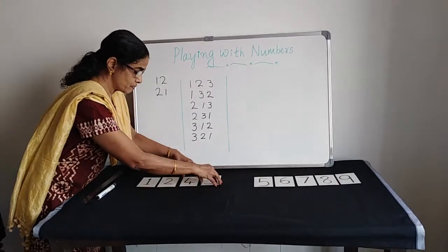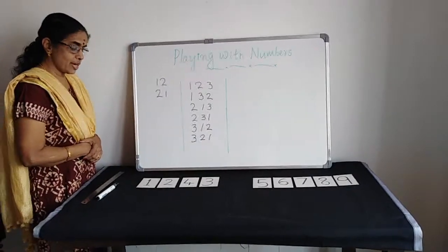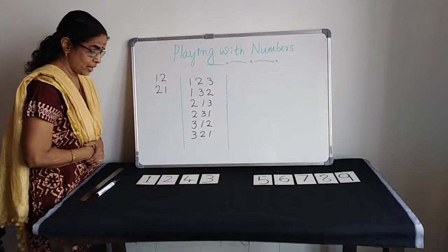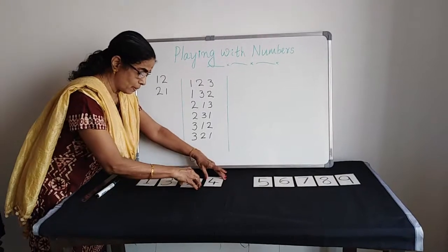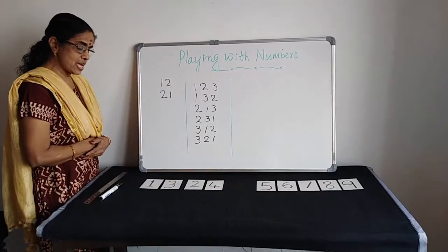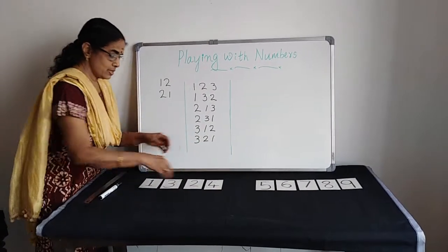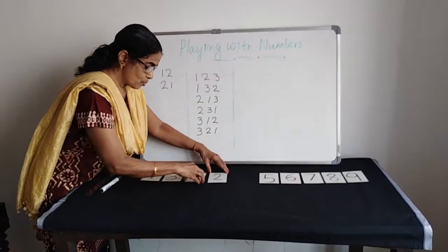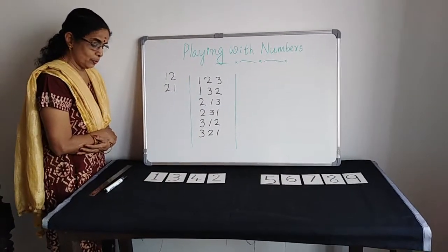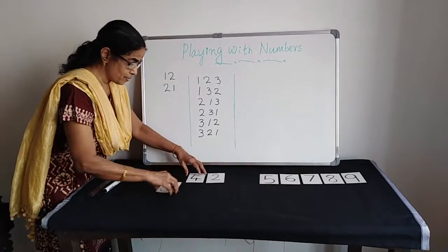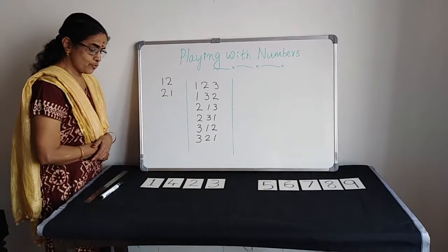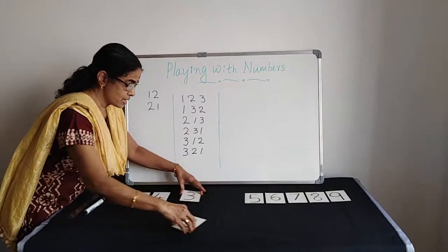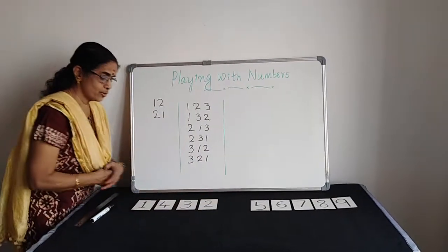The next number is 1, 243. Now I am going to do with 1, 3. So 1, 324. The next number is 1, 342. Now we are going to start with 1, 4. 1, 423. The next number is 1, 432. How many numbers we made?